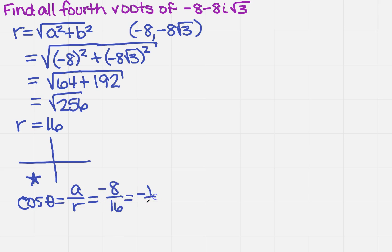So for what angle is the cosine equal to negative 1 half? Well, I know that that makes theta 240 degrees, because remember, it has to be in quadrant 3.